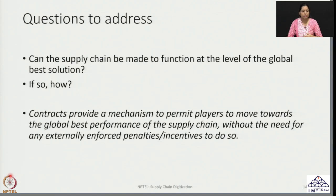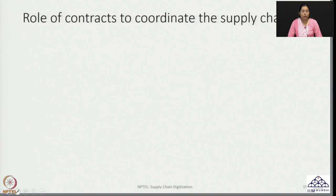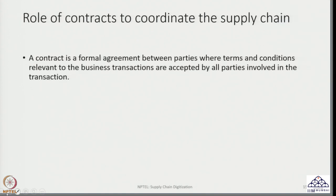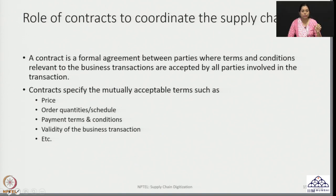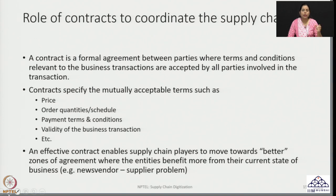When we look at the role of contracts, it is basically a formal agreement between the parties where certain terms and conditions are mutually agreed upon. These conditions could include what price you are going to sell at, what the order quantities will be, the ordering schedule, when the order is placed, when it is received, the various payment terms and conditions, the credit period, the duration of the contract itself, and any other parameters crucial to that particular business transaction. An effective contract would see to it that all players in the supply chain move to a better-off position.